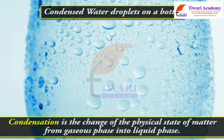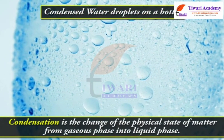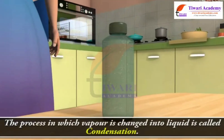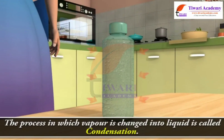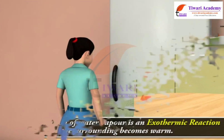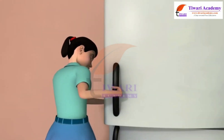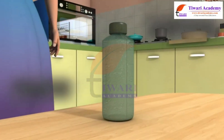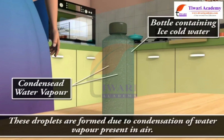Condensation is the change of the physical state of matter from the gaseous phase into the liquid phase. The process in which vapor is changed into liquid is called condensation. The condensation of water vapor is an exothermic reaction, so the surroundings become warm. Water droplets seen on the outer surface of a glass containing ice-cold water are formed due to condensation of water vapor present in air.